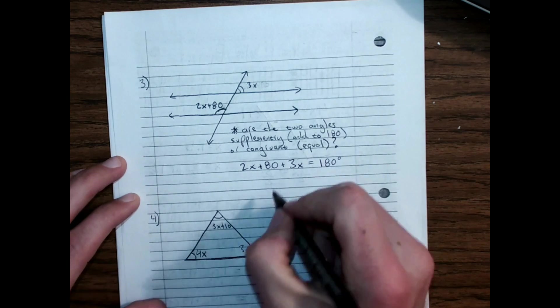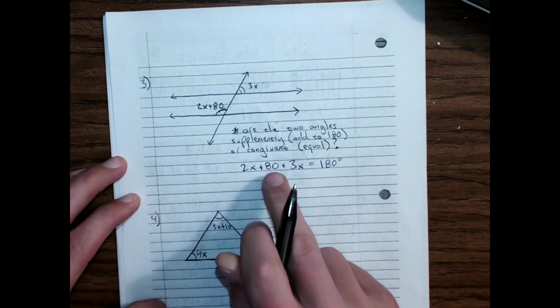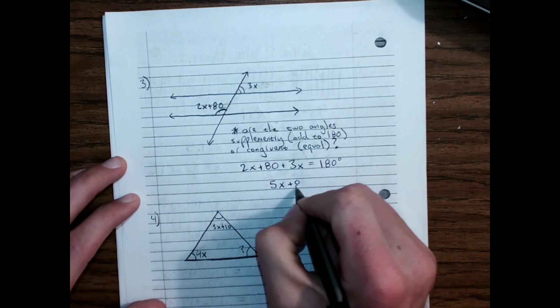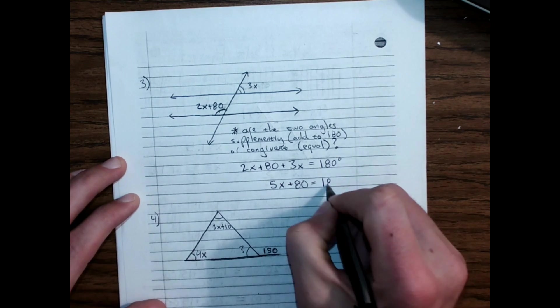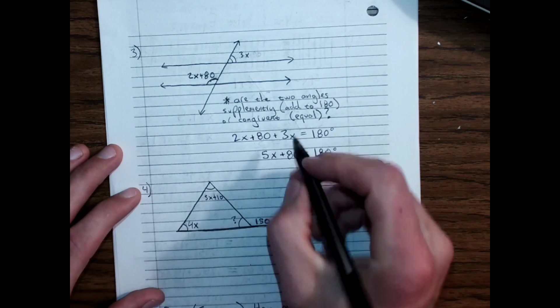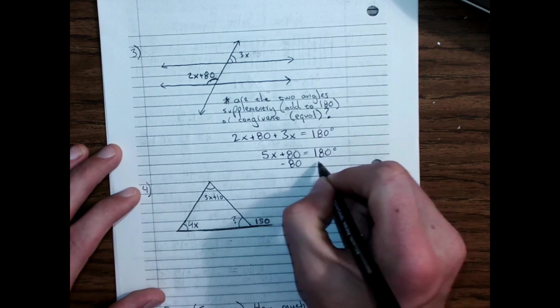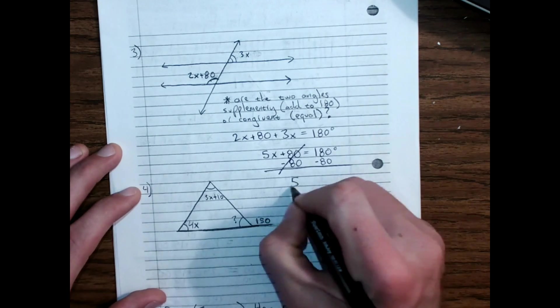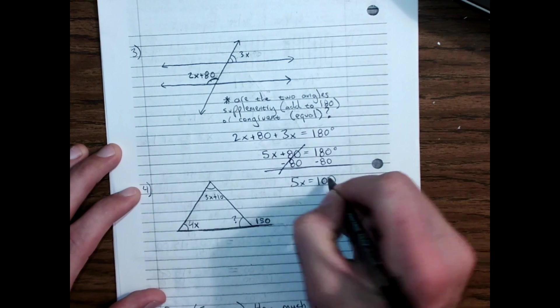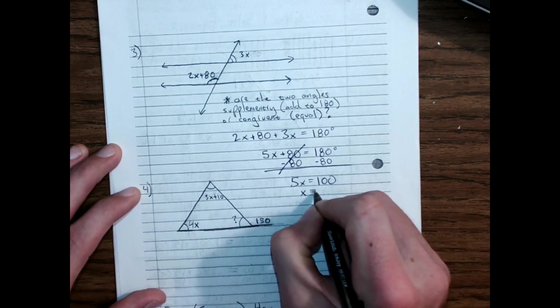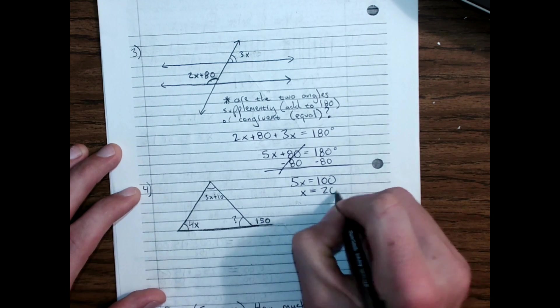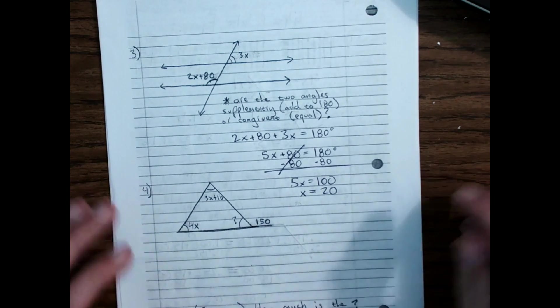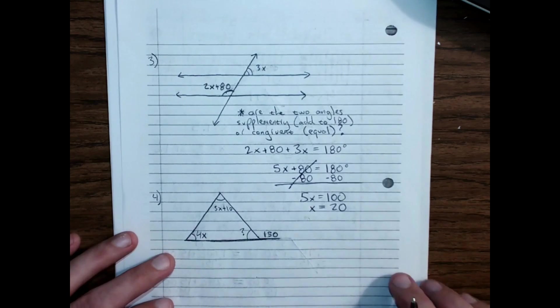2x plus 3x is 5x. The 80 is still over here. And now we just solve. Subtract 80 from both sides. So, we have the same answer twice in a row.